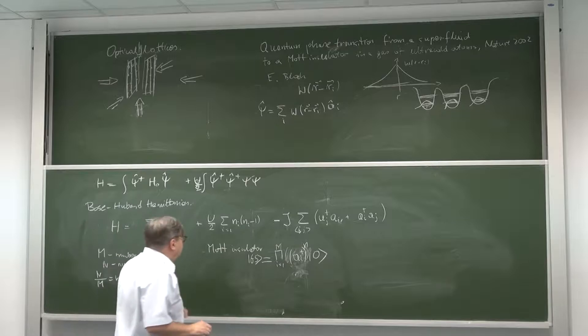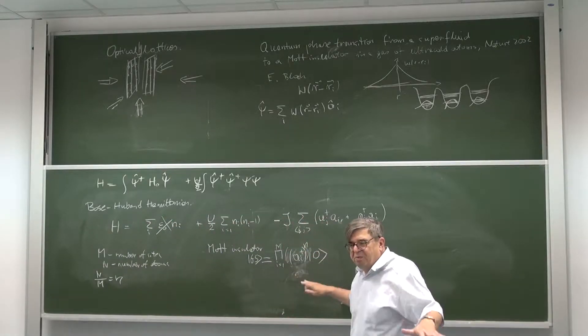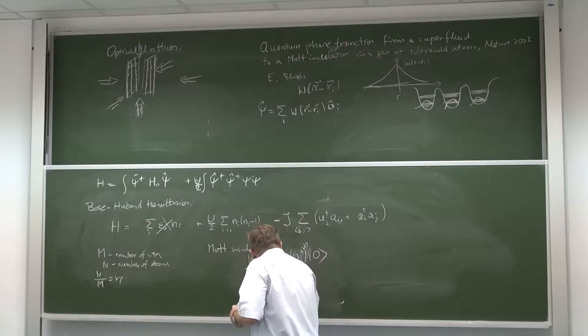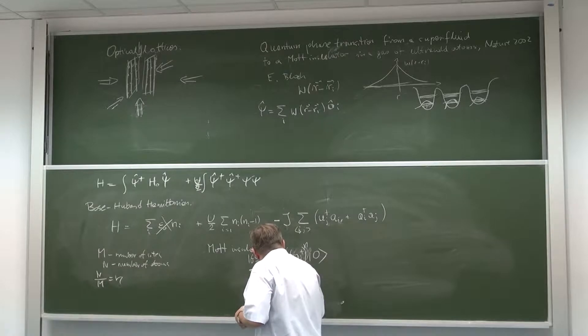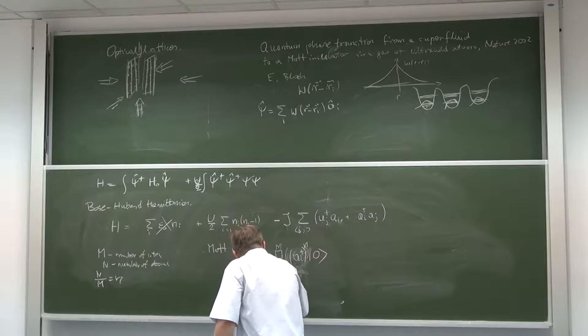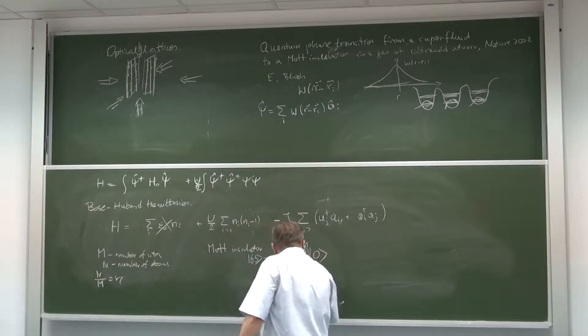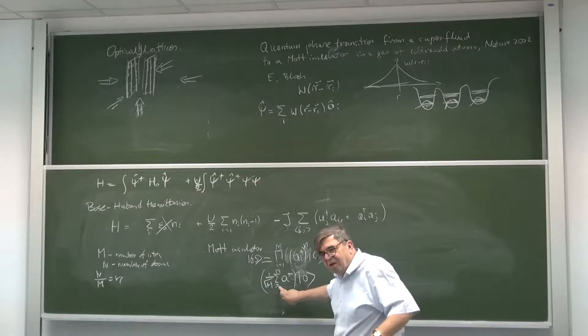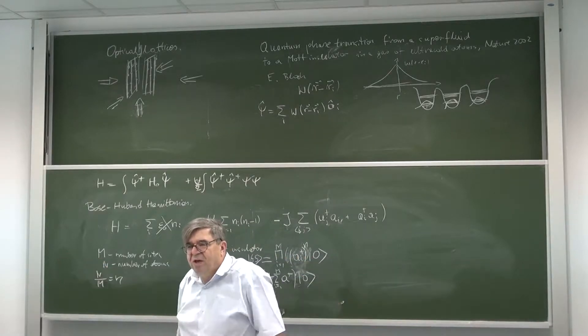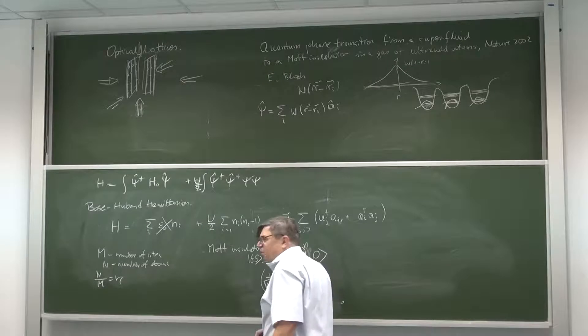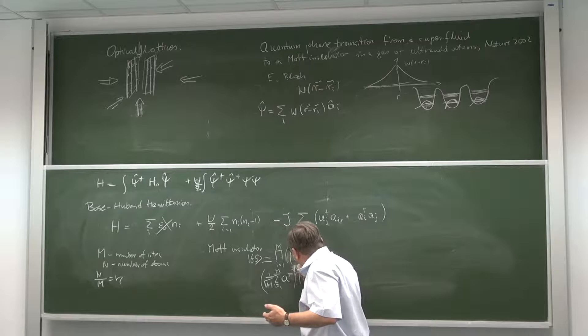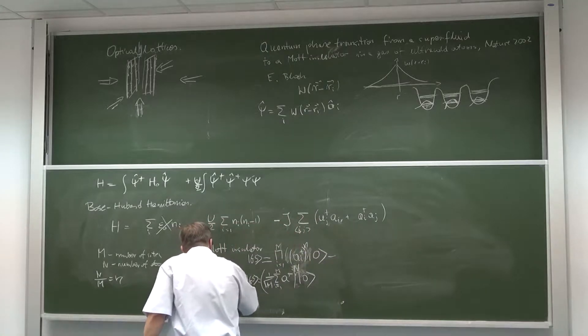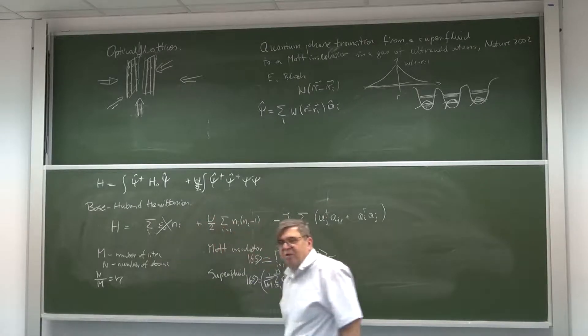This is insulating phase, there are no fluctuations of atom per site. Then there is another possibility. You will get the largest possible minimum energy if the atom is everywhere on the lattice. So you create an atom, you sum over all lattice sites, probably you have to normalize it. This is one atom created in the superposition of i=1, i=2, i=3 states. So the atom is evenly distributed over entire space, and then you have n atoms all together. This is the ground state, this is Mott, and this is superfluid.